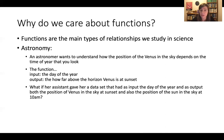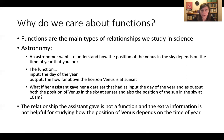Or this is one function that you could look at as an astronomer to try to understand this relationship. So now let's suppose that astronomer's assistant gave her a data set that had as input the day of the year. And as output gave both the position of Venus in the sky at sunset and also the position of the sun in the sky at 10 a.m. on that day. Okay, but that relationship that the assistant gave is not a function. And that extra information about the position of the sun is not helpful for studying how the position of Venus depends on the time of the year. Okay, so hopefully that motivates a little bit why we bother with functions.